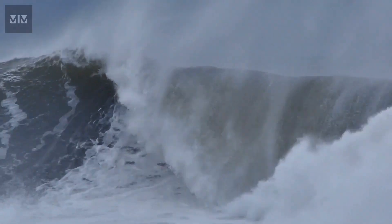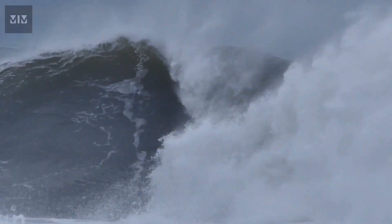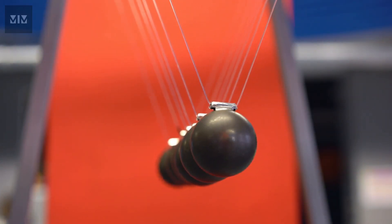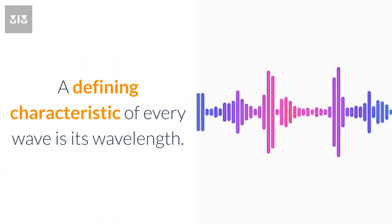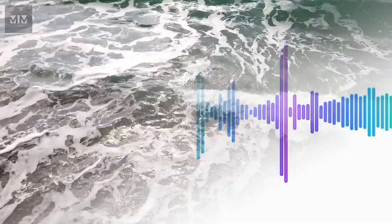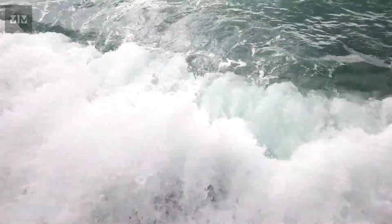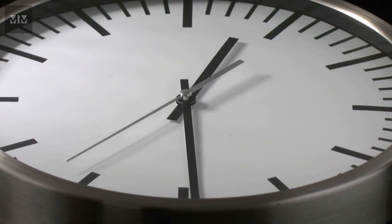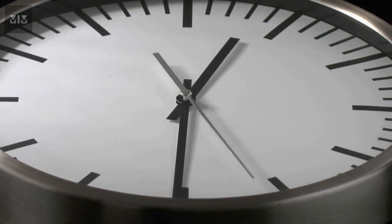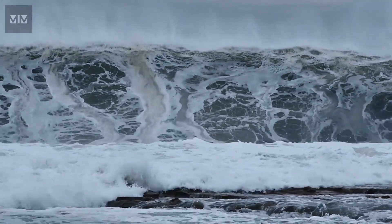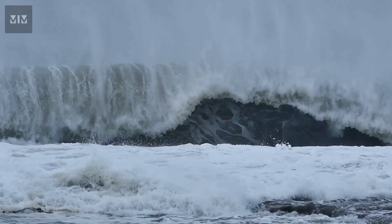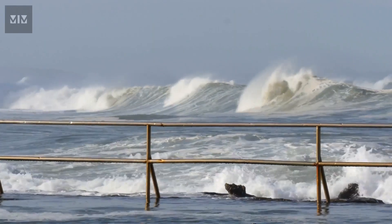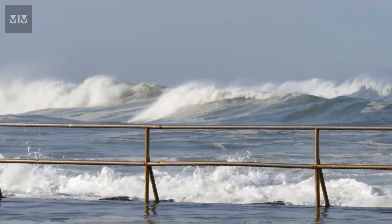Tsunamis are indeed waves, but unlike wind waves, they have a much larger wavelength. Think about waves in the context of physics, not in the context of sea waves. A defining characteristic of every wave is its wavelength. Wind waves have short wavelengths, clearly seen on any shoreline — they come in every few seconds with a few meters in between, sometimes even less. But a tsunami has a huge wavelength, oftentimes longer than a hundred kilometers, and this is why they are so dangerous. Tsunamis are almost always not singular waves, but come in as train waves.